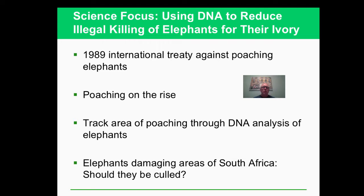Elephants are an issue right now. There's a story in 2017 about allowing some ivory from elephants back into the country, which had been banned before. There's an exotic trade involving the tusks of rhinoceroses and elephants, and this leads to killing because there's money to be made. This was addressed by an international treaty, but there's still a problem going on.